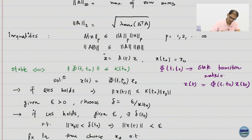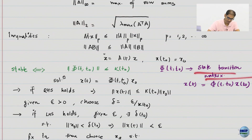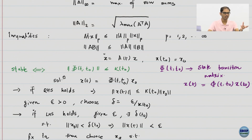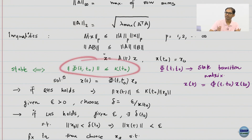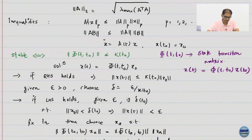We specified this condition for stability for linear systems, which is connected to the state transition matrix, and let us see how to prove it. We are actually saying this is equivalent. In a lot of linear systems books you will not see epsilon-delta definitions, but you will see this as the definition for internal stability.